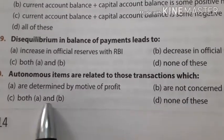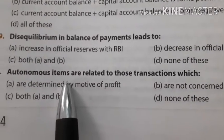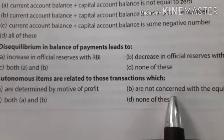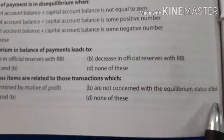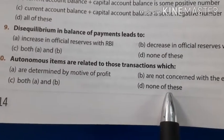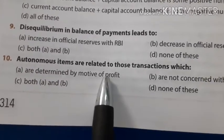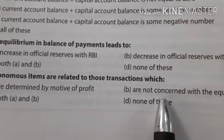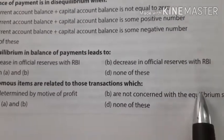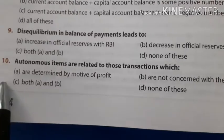Autonomous items are related to those transactions which: first, are determined by profit motive; second, are not concerned with the equilibrium status of balance of payment; third, both A and B; or none of these. Autonomous items are determined by profit motive, and because they are profit-motivated, they are not concerned with the equilibrium status of BOP. So both A and B are correct — the answer is C.